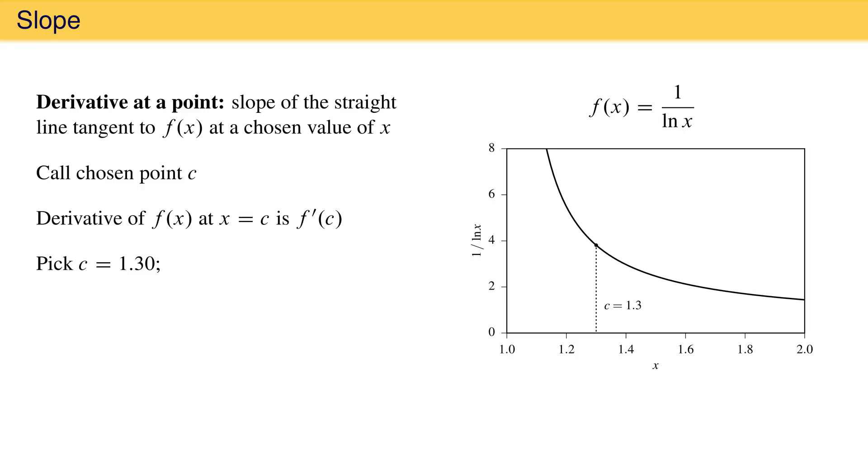If we pick the point c equal to 1.3, we can find the derivative at that point by drawing on the plot the line tangent to the function at that point and then finding its slope. In this case, the slope is negative 11.2, and that means the derivative of the function at x equal 1.3 is negative 11.2.